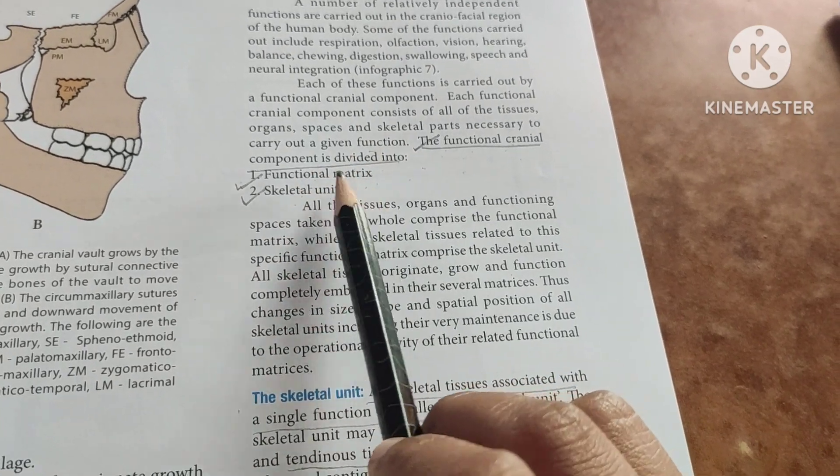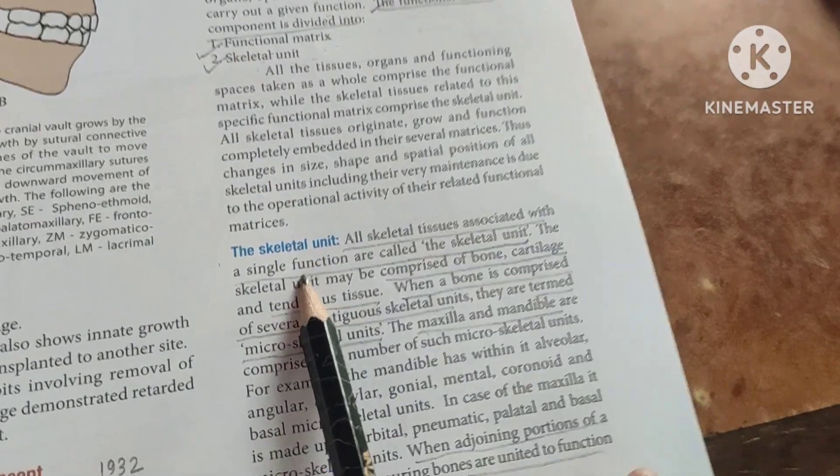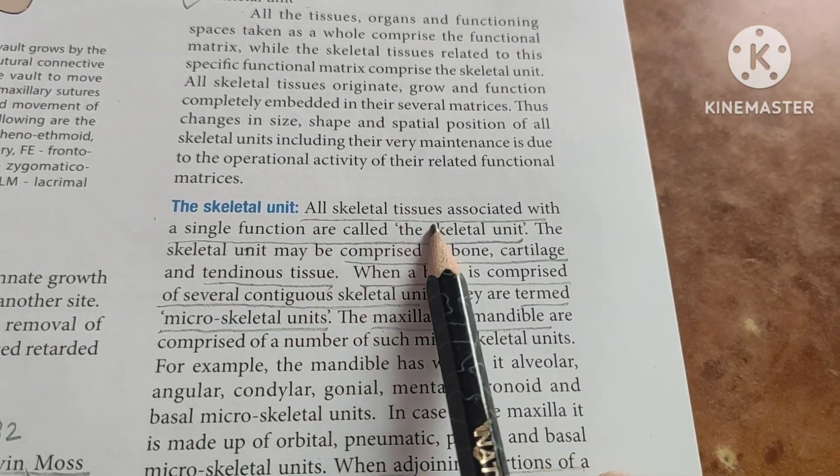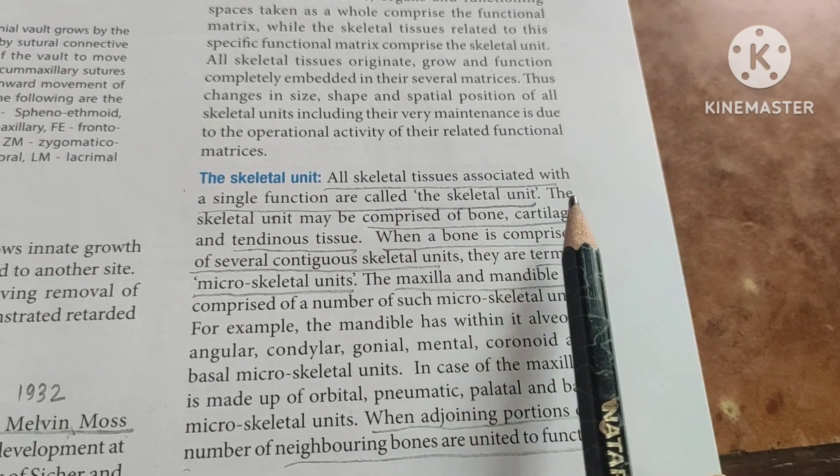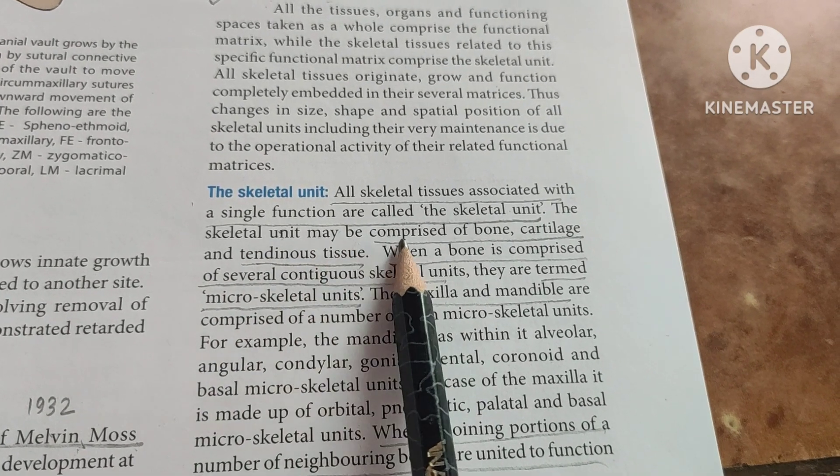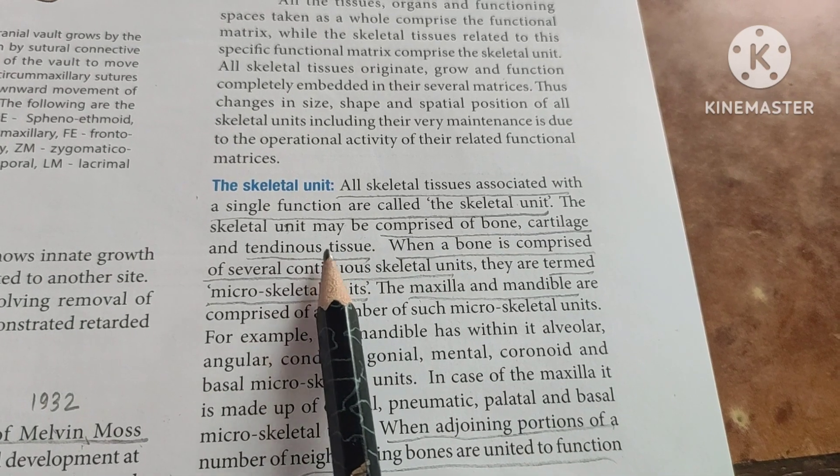First, let's learn about the skeletal unit. All skeletal tissue associated with a single function are called the skeletal unit. The skeletal unit may be comprised of bone, cartilage, and tendinous tissue.